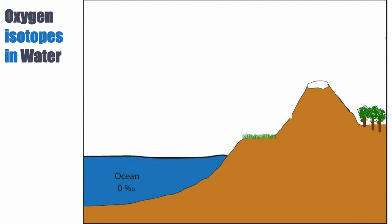In the tropical ocean, what typically happens is we have evaporation. Evaporation essentially means that the water molecule needs to be taken from a liquid form and put into a vapor phase — a change of phase. That's the really important concept, because every time we have a change of phase, we have fractionation of the isotopes.